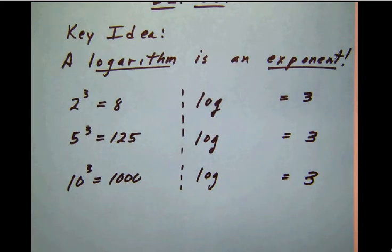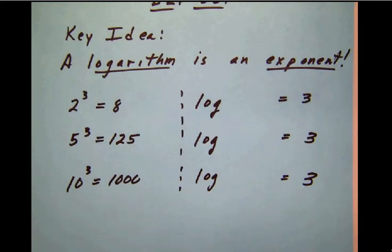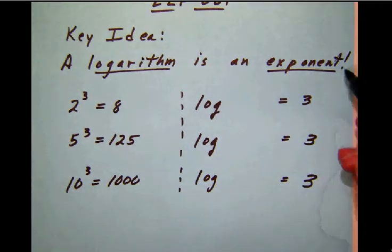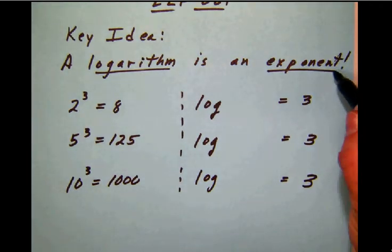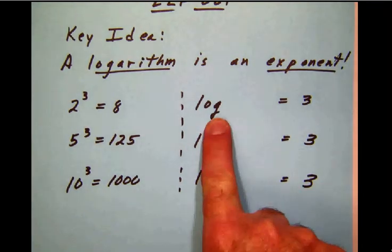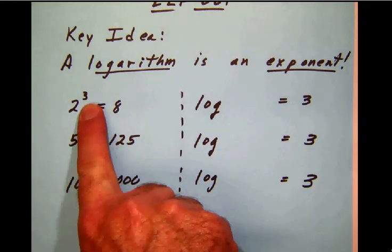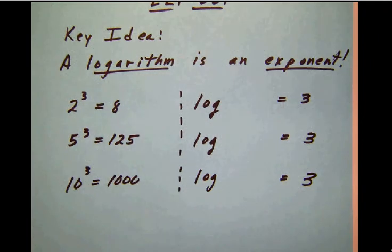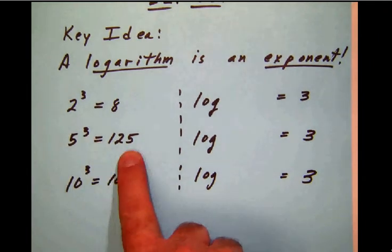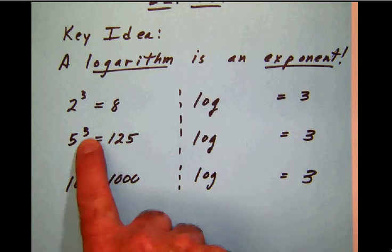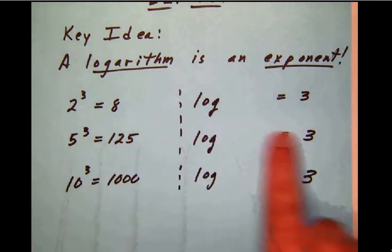From now on, we will have this idea that we're talking about a logarithm. And a logarithm is just an exponent. So here we can say the logarithm is 3 because a logarithm is an exponent. Now we look at the next one. 5 to the third power is 125. What's the logarithm? What's the exponent here? And you would say 3.